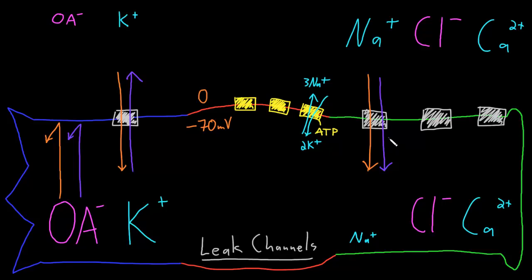If we had a membrane only permeable to sodium, these cations would flow in until so many positive charges entered that the inside wouldn't be negative anymore — it would become positive, at which point the electrical force would switch. It would have to get quite positive inside for the electrical force to balance the diffusion force, reaching the equilibrium potential of sodium at around positive 50 millivolts. However, when the neuron membrane is at rest, the permeability to sodium is actually quite a bit less than for potassium — the resting permeability to sodium is something like 4% of that of potassium.